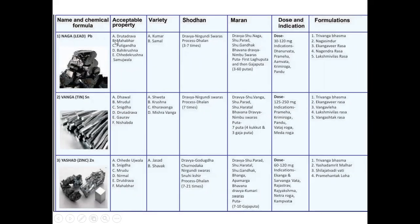The properties of Naga are: Dhrith Drava — it melts very fast. Then Mahabhar — it is heavy. Putigandha — this is very specific; Puti means a foul smell. Then Baha Krishna — you can see the black colour. Chede Krishna — if you cut it, it is black inside, and Samujjwal — bright on the cut surface. The varieties are Kumar and Samala.